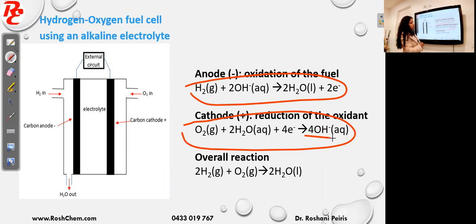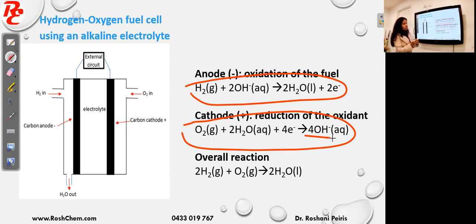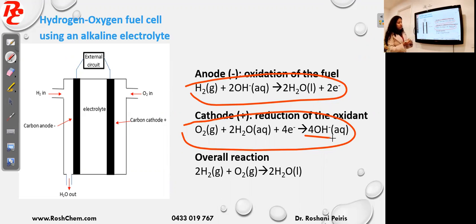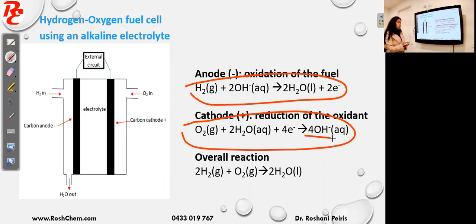You add these two reactions together, but first you need to multiply the first equation by two to make the electrons equal. After that, you add them and get the overall reaction, which is the same as before — the combustion of the fuel. In both fuel cells the fuel is hydrogen gas, so the combustion of hydrogen is H₂ + O₂ giving H₂O.